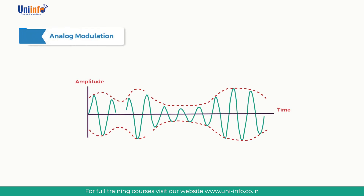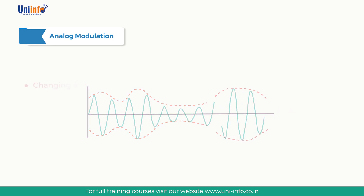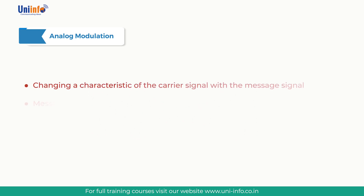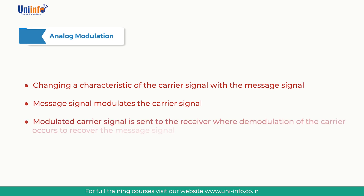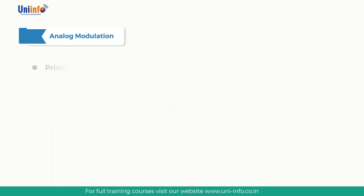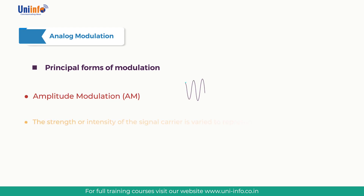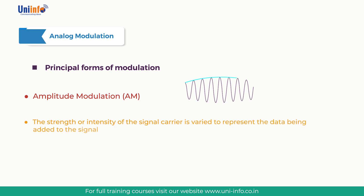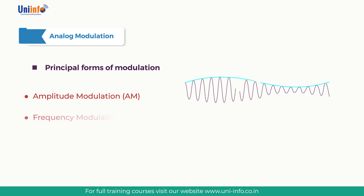Analog modulation is a process of changing a characteristic of the carrier signal with the message signal. In the transmitter, the message signal modulates the carrier signal. The modulated carrier signal is sent to the receiver where demodulation occurs to recover the message signal. There are three principal forms of modulation. First is amplitude modulation (AM), where the strength or intensity of the carrier signal is varied to represent the data being added.